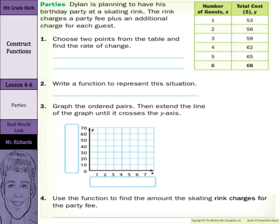Hi, Mr. Richards here. Today's lesson is on construct functions. Our objective is to determine and interpret the rate of change and initial value of a function. Our real-world link today is on parties. Dylan is planning to have his birthday party at a skating rink. The rink charges a party fee plus an additional charge for each guest.